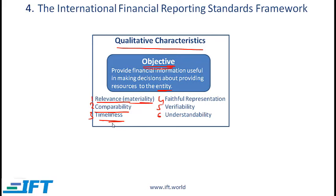Faithful representation means that the financial information presented reflects the underlying economic reality. So if the financial reports make the company look better than it actually is, then the information is not being faithfully represented. Verifiability means that the information being presented is easily verifiable, and understandability means that the information can be understood by a reasonably informed business person. Detailed accounting jargon such as debits and credits are not used in financial reports because of this characteristic.